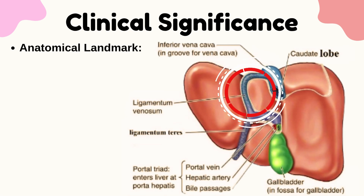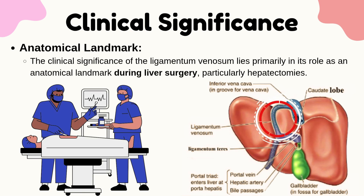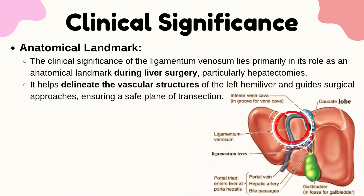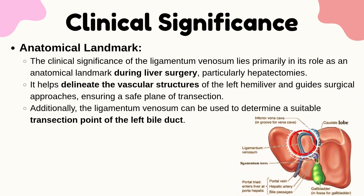As an anatomical landmark, the clinical significance of the Ligamentum Venosum lies primarily in its role during liver surgery, particularly hepatectomies. It helps delineate the vascular structures of the left hemi-liver and guides surgical approaches, ensuring a safe plane of transection. Additionally, the Ligamentum Venosum can be used to determine a suitable transection point of the left bile duct.